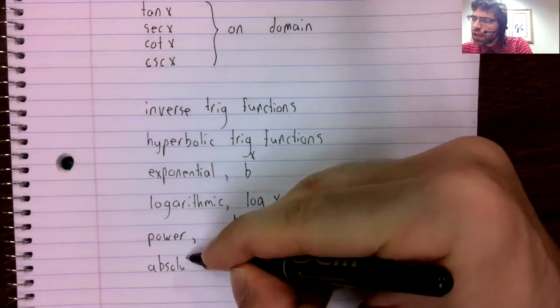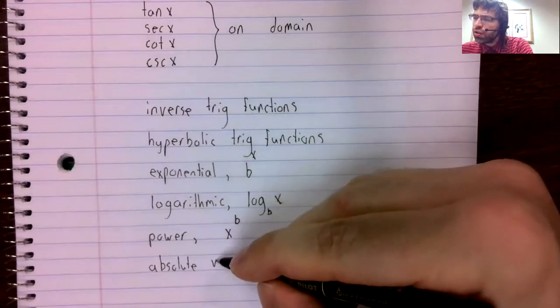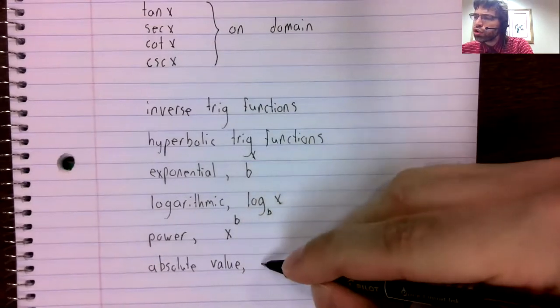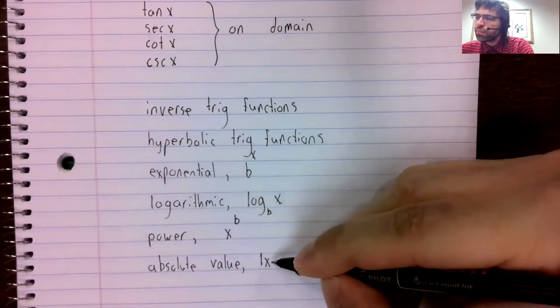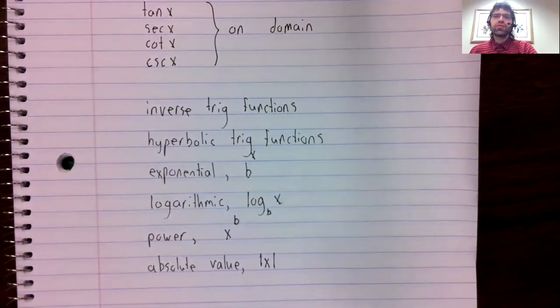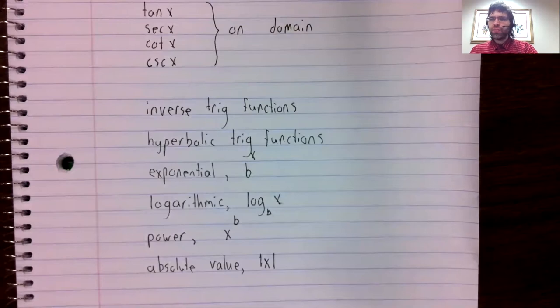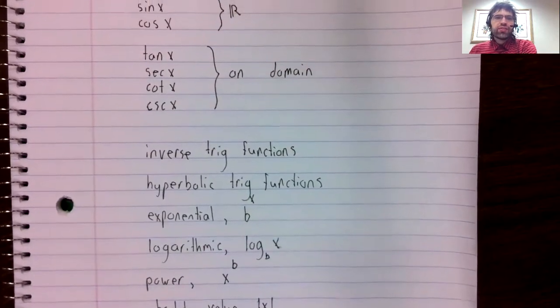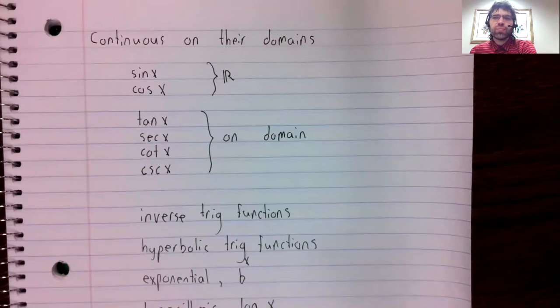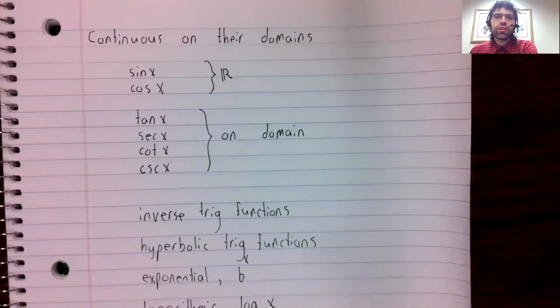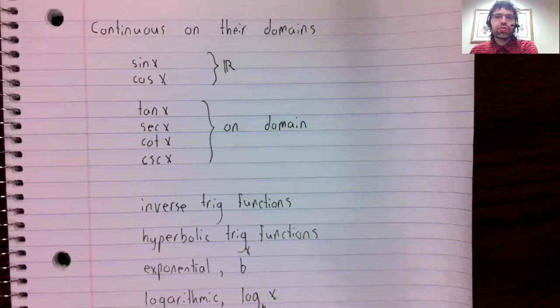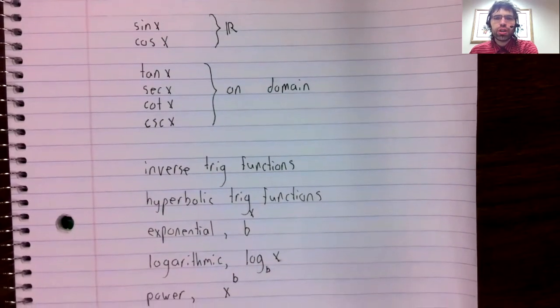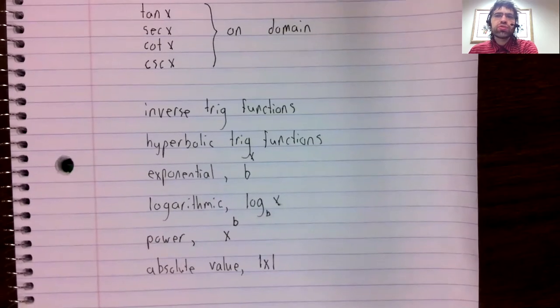The absolute value function is continuous on its domain, and this list of continuous functions is pretty much all of the functions we look at in high school and college algebra. So most day-to-day functions are continuous.